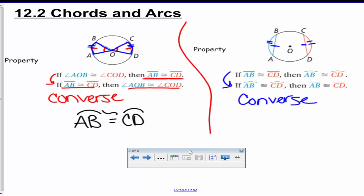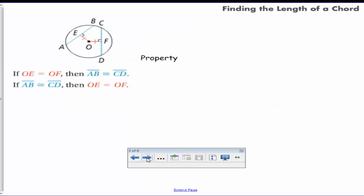Make sure you have those two properties written down. Now the next property is the same idea, the converse works, but now this time with the chords, it says if OE from O to E is from the center to the chord, if it's congruent to the other center to chord distance, then you can say that these two chords AB and CD are going to be congruent.